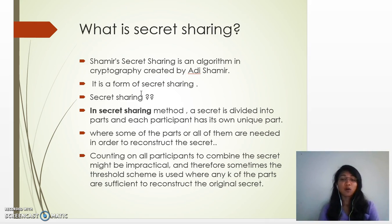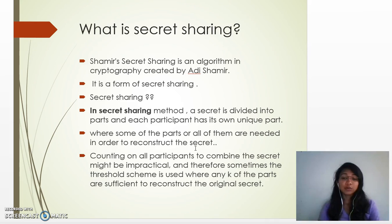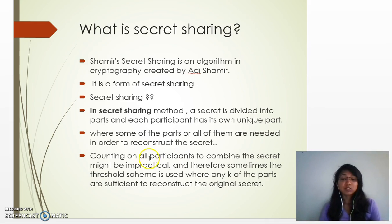Shamir's Secret Sharing is an algorithm given by Adi Shamir. It is a form of secret sharing — a method where a secret is divided into many parts and each participant has their own unique part. Some or all of the parts are needed to reconstruct the secret. Since combining all parts can be impractical, a threshold scheme is used where any k of the parts are sufficient to reconstruct the original secret.